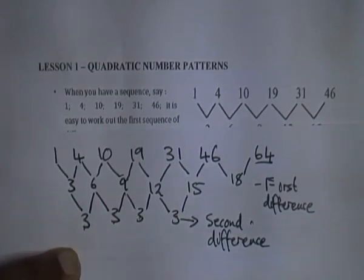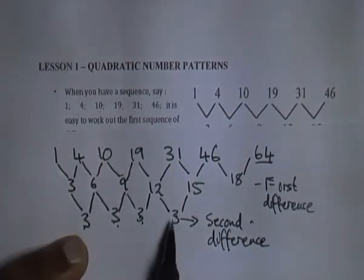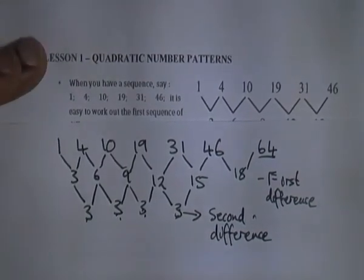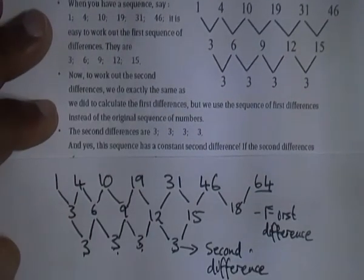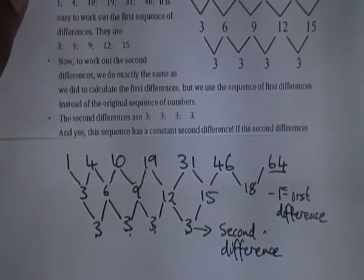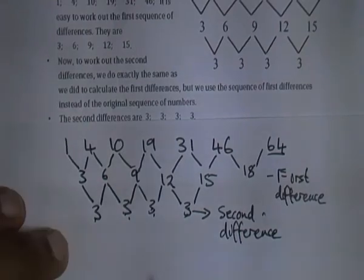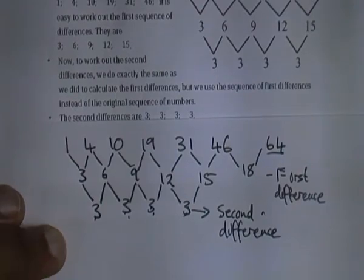When you have a sequence of numbers that has a second difference that is the same throughout, then you know you're dealing with a quadratic sequence. With the quadratic sequence we also have to write the general formula of this sequence.